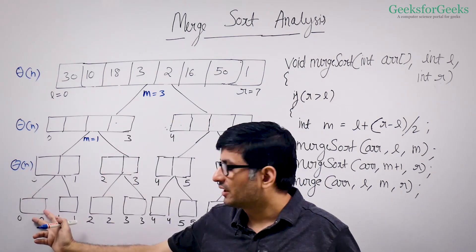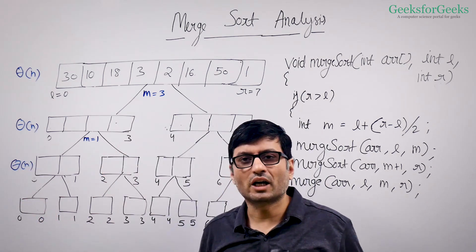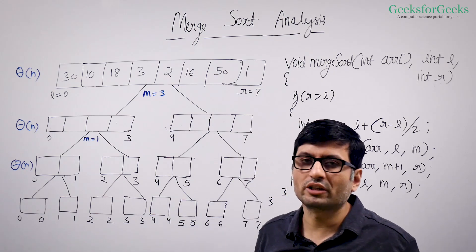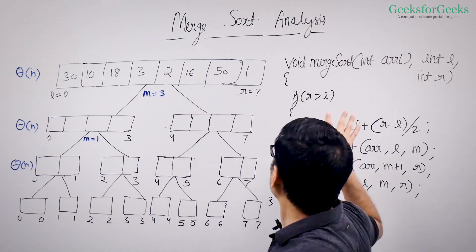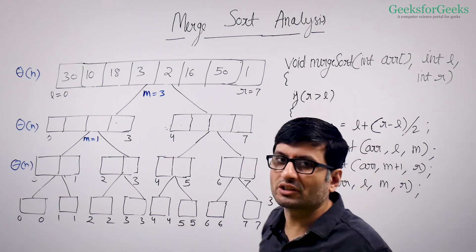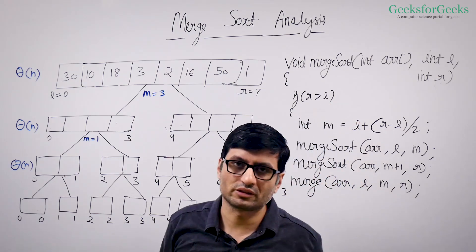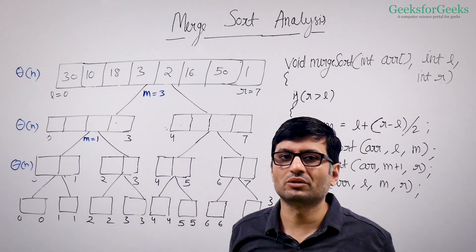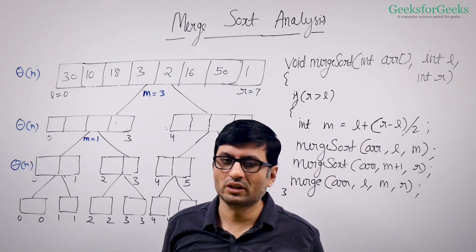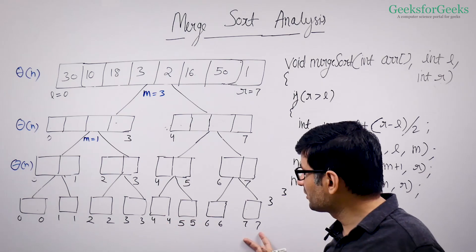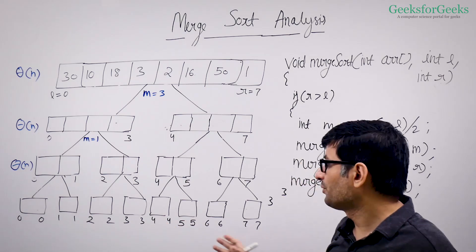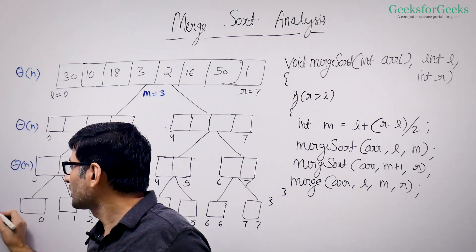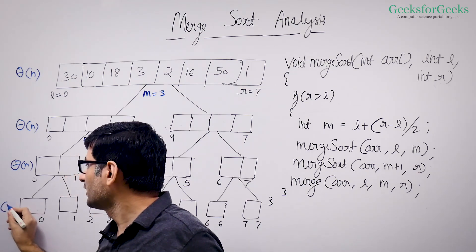At the last level, each recursive call simply checks the base condition and returns — doing theta(1) work. How many such recursive calls are there at the bottom? We have N recursive calls, so the total work at the last level is theta(1) times N, which is theta(N).